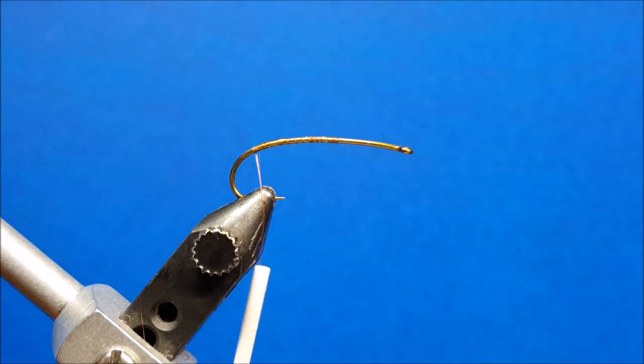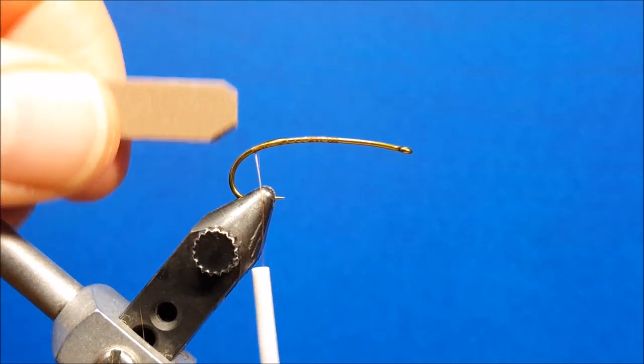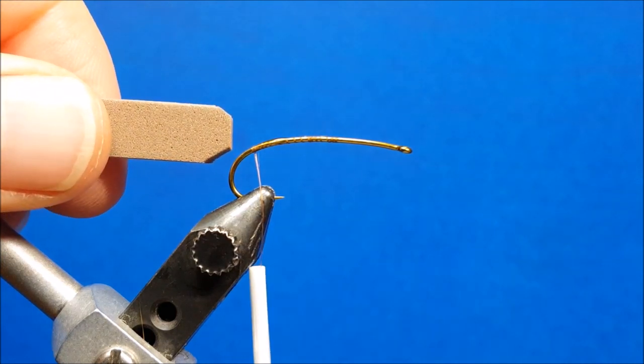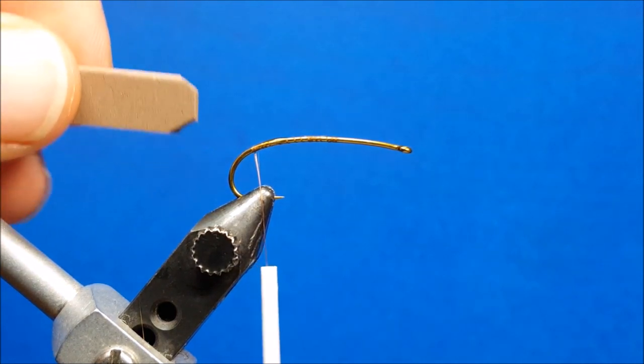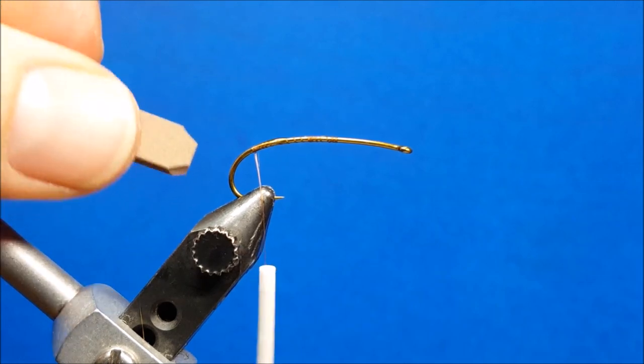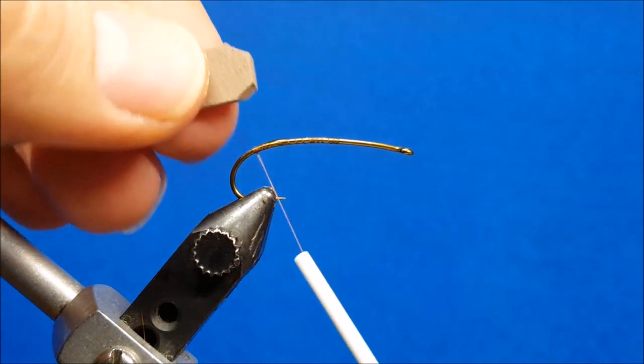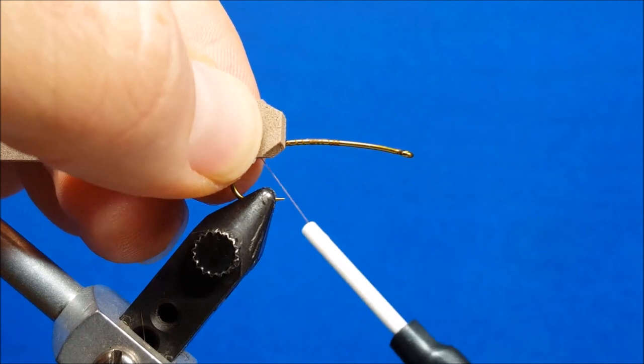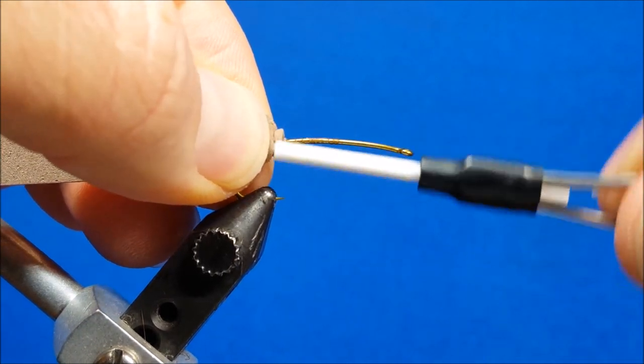Once I have that on there I'm going to take my piece of foam. This is just two millimeter tying foam. I've cut it to the general width of the hook gap and cut the edges off, which just makes it a little easier to grab at the start. I'm going to set it down there so just that taper is sticking out in front and start to catch it with my thread.